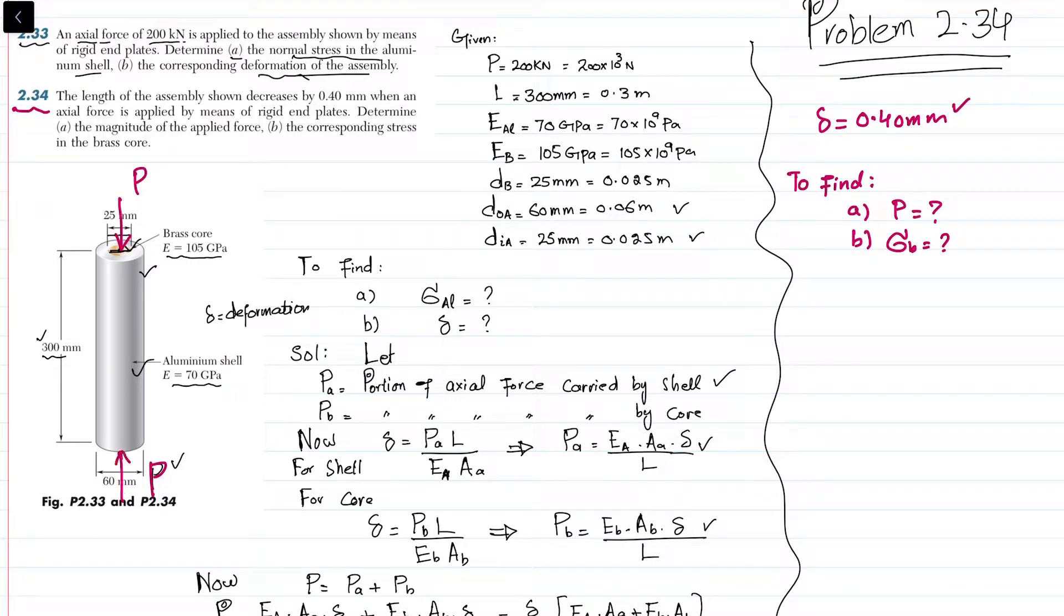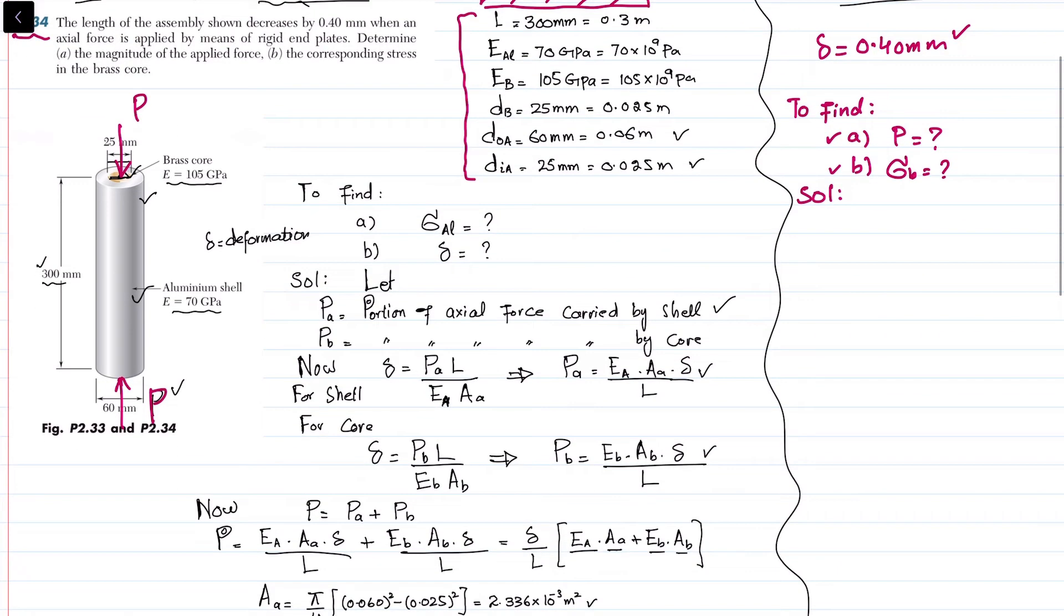The solution for problem 2.34 will be somewhat equal to problem 2.33, so I'm not going to write all the data again. All the data are given over here except this one, which we have to neglect because it was for problem 2.33. All the lengths, modulus of elasticity, and outer diameters are given.